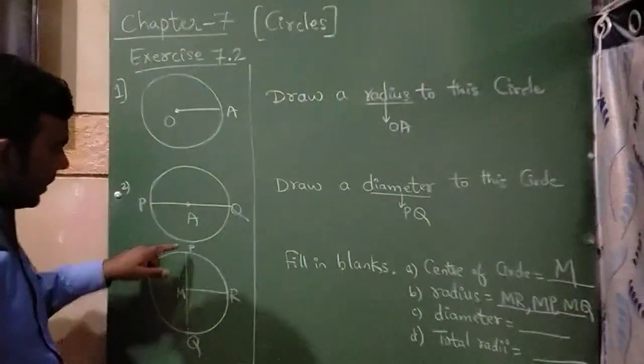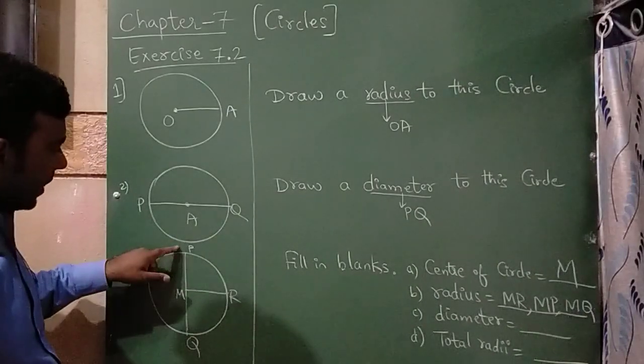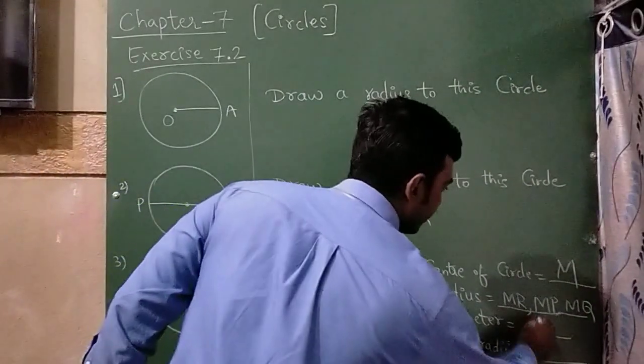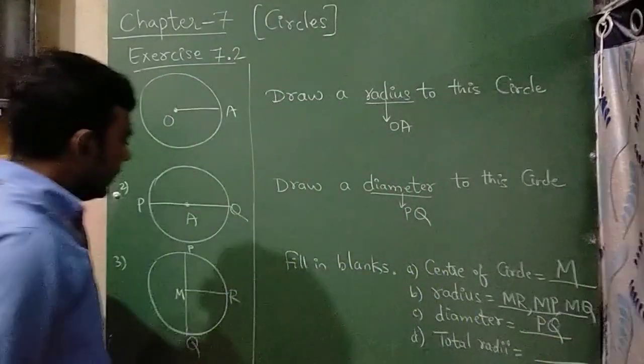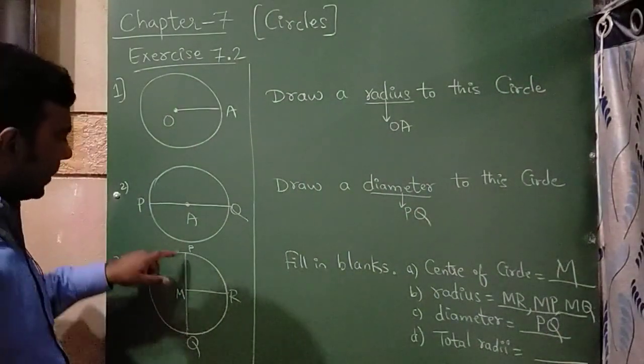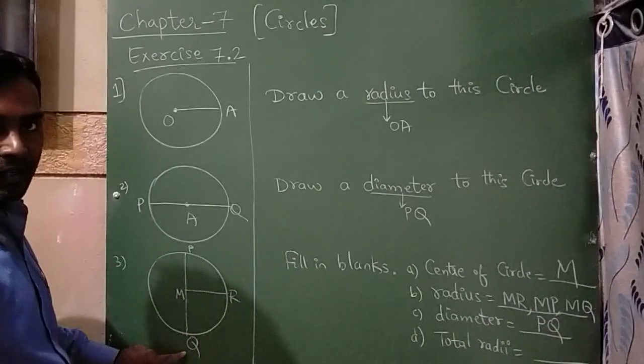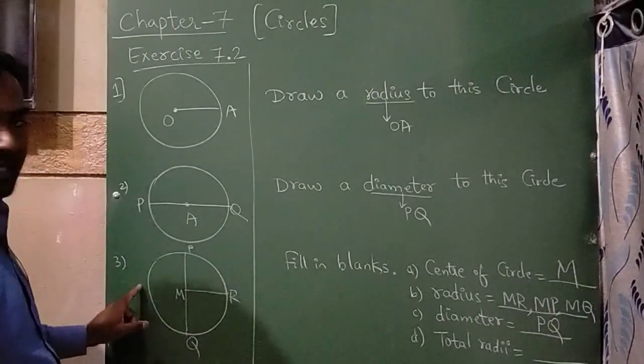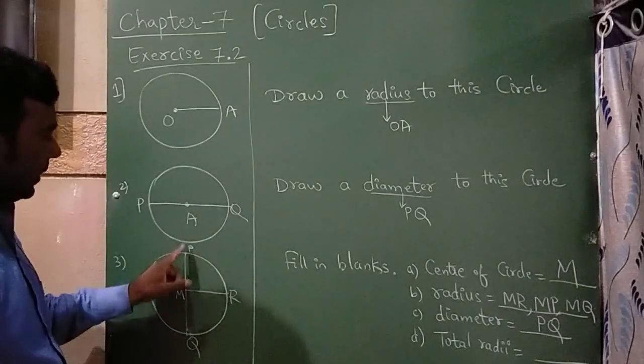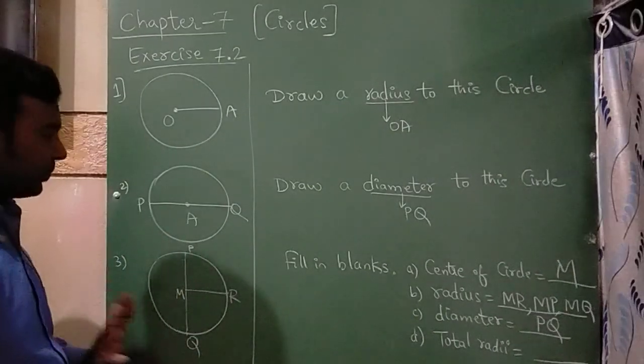Now diameter. Diameter is only one. It is from P to Q. Diameter means from one end of the circle it is touching the other end of the circle. This one is not touching the other end. So only one diameter, that is from P to Q.